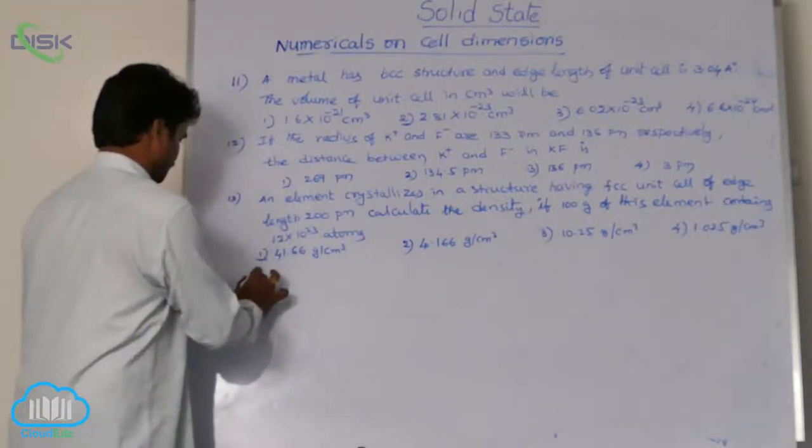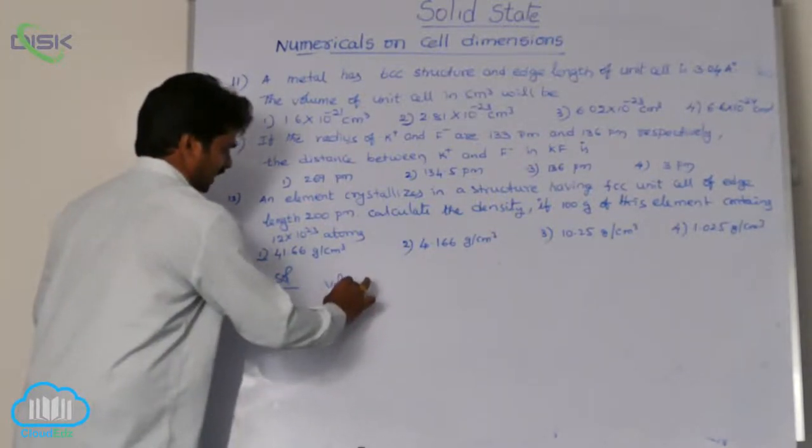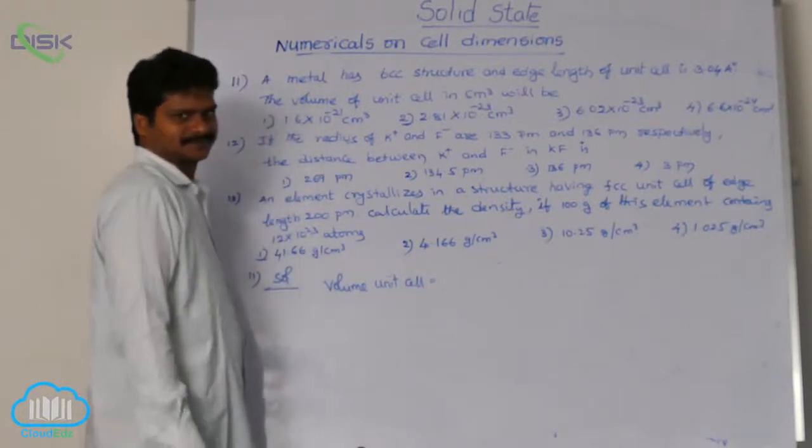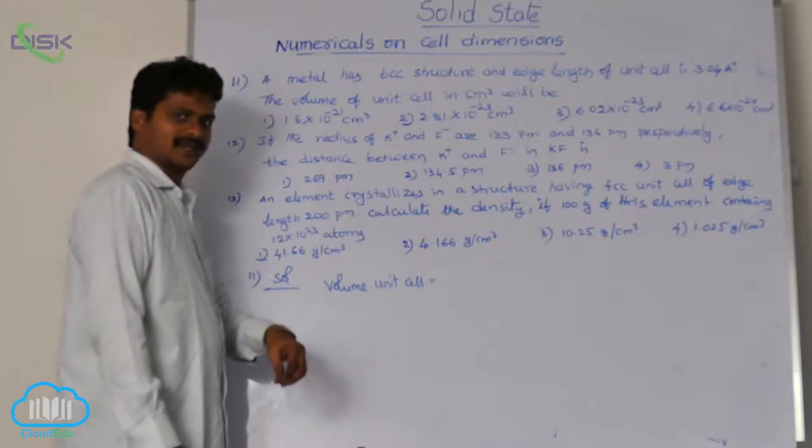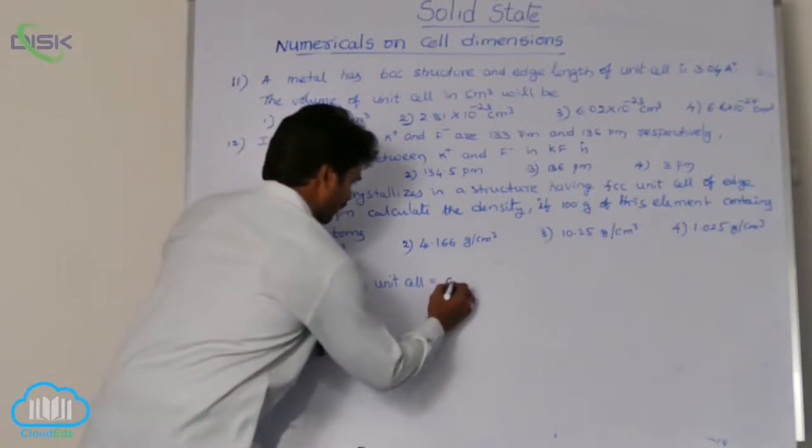See the solution for 11th question. Volume of unit cell, because the given one cubic system, whatever it may be, whether it is FCC, BCC, or simple cube, formula is A cube.